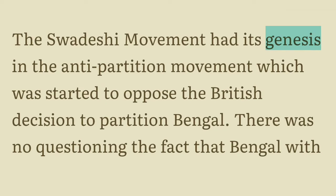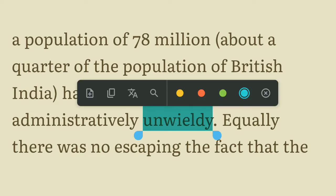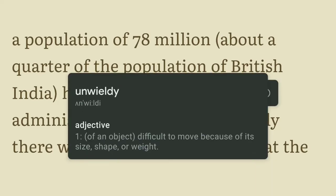The Swadeshi Movement has its genesis in the anti-partition movement, which was started to oppose the British decision to partition Bengal. There was no questioning the fact that Bengal, with a population of 78 million — about a quarter of the population of British India — had indeed become administratively unwieldy, meaning difficult to manage because of its size, shape or width.